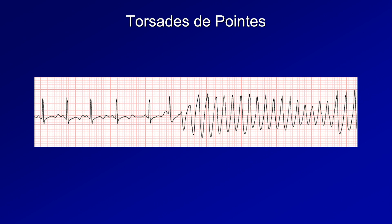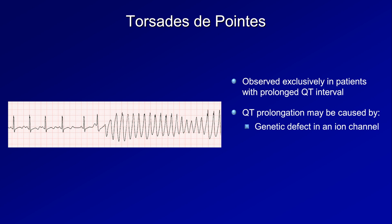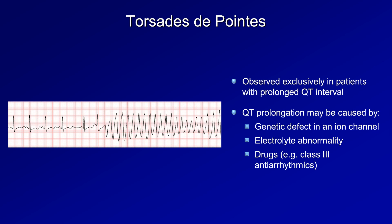Here's an example of what it looks like. The first half is not torsade, but demonstrates this patient's profoundly prolonged QT interval. There's a brief pause in the rhythm, and the second beat after the pause triggers a very rapid polymorphic ventricular tachycardia. Torsade is seen solely in patients with a prolonged QT interval, either because of a genetic defect in one of the transmembrane ion channels, an electrolyte abnormality, or medications such as potassium channel blockers. This rhythm is very dangerous. While it can spontaneously revert back to sinus on its own, it can also easily degenerate into ventricular fibrillation and death.